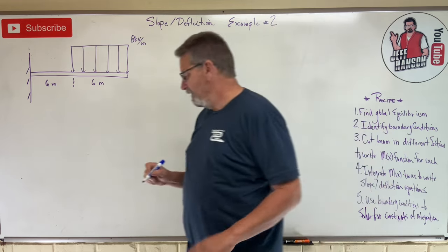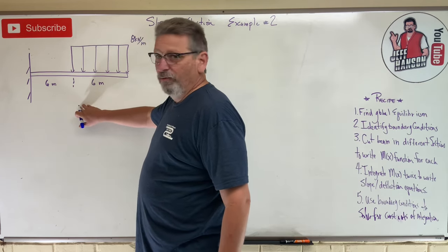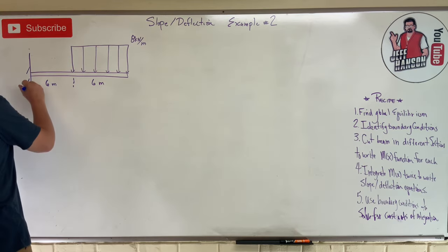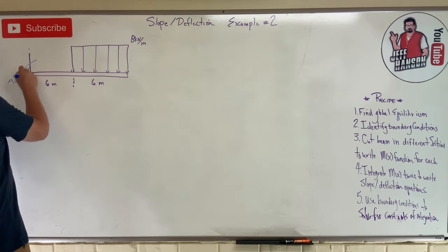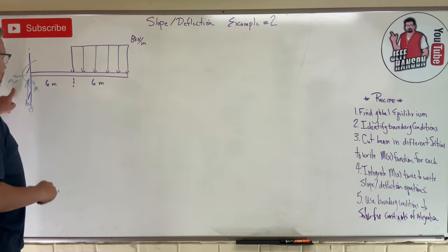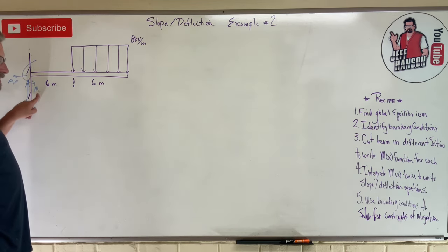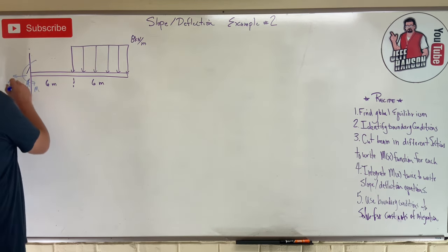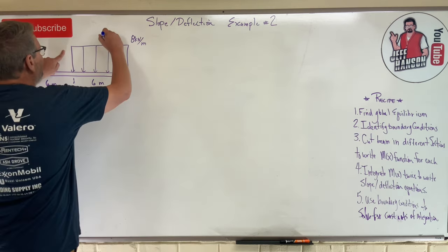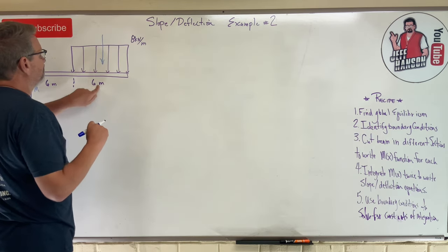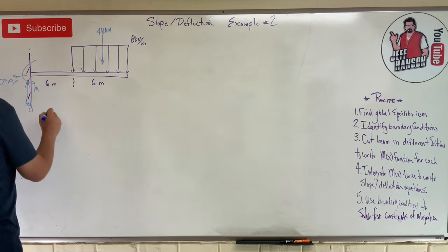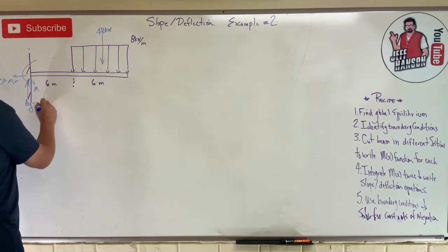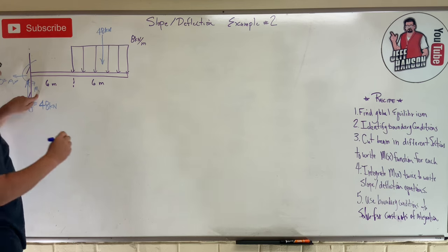Let's do a little bit of statics. What are our global reactions? This is a fixed connection, so we have an Ax, an Ay, and a resistive bending moment at the wall. Ax is going to be zero. We can turn the distributed load into a concentrated load: 6 times 8 is 48 kilonewtons. Summing forces in y gives us Ay equals 48 kilonewtons.